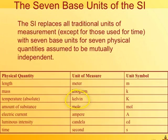Temperature uses the Kelvin scale. Kelvin is basically the same as Celsius, but you just add 273 degrees. The amount of a substance — how many parts you have — is called a mole.